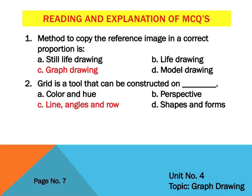Now students, open your notes — unit number 4, topic: graph drawing, page number 7. MCQ number 1: the method to copy the reference image in correct proportion is — graph drawing. MCQ number 2: grid is the tool that can be constructed on — lines, angles, and rows. Correct answer: lines, angles, and rows.